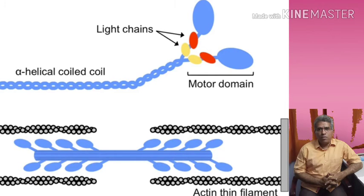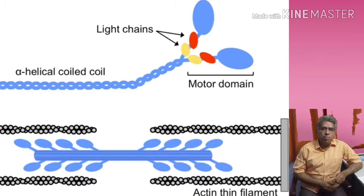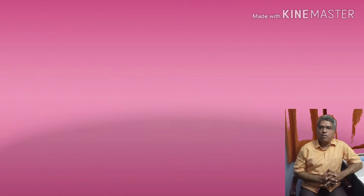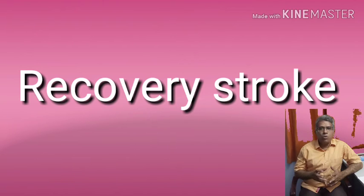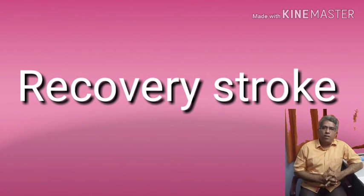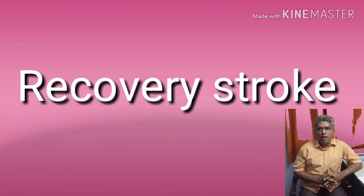Coming to the recovery stroke: the myosin cross bridge gets detached and again binds to ATP — ATP is required even for muscle relaxation. The myosin returns to its original position; this is called the recovery stroke. Both the power stroke and the recovery stroke require ATP, so they are called active strokes — they are not passive.